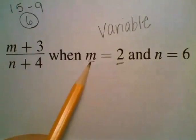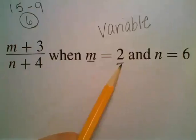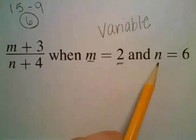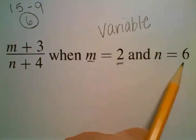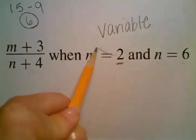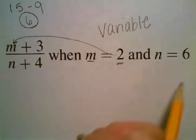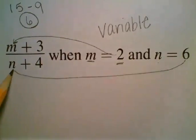Same thing as before. Wherever there's an m, we're going to put a 2. And wherever there's an n, we're going to put a 6. So the 2 is going to go up here, and the 6 is going to go over here.